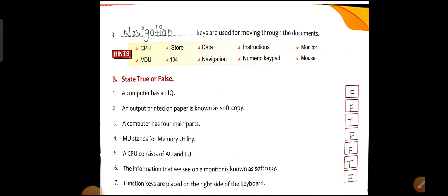Point number 3: A computer has 4 main parts. This is True. The four main parts of a computer are Mouse, Keyboard, Monitor, and CPU.